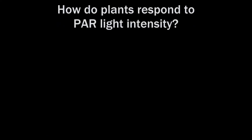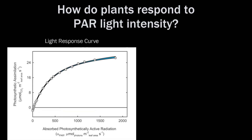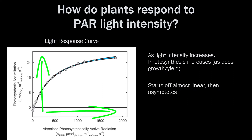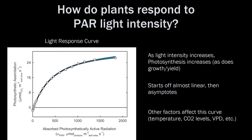How do plants respond to the intensity of light within this PAR wave band? Looking at this light response curve, we can see that as the photosynthetic active radiation increases, we have an increase in the photosynthetic process. This starts off almost linear but then kind of plateaus off. Other factors that affect the shape of this curve are temperature, CO2 levels, and VPD. Artificial lamps and their manufacturers have specifications, but it's not always a true indication of what the actual light intensity is at your plant level.